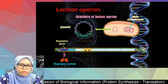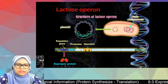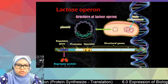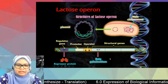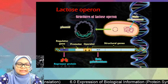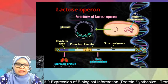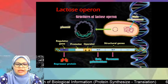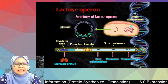After the regulator gene, we have the promoter, operator, and then the structural genes. For the structural genes: lacZ codes for the enzyme beta-galactosidase, lacY codes for the enzyme permease, and lacA codes for the enzyme transacetylase.